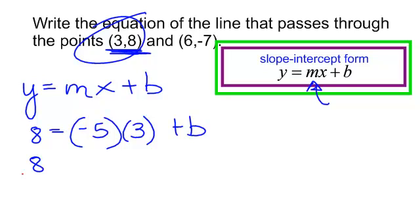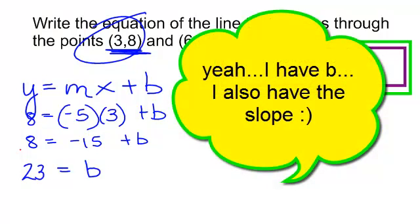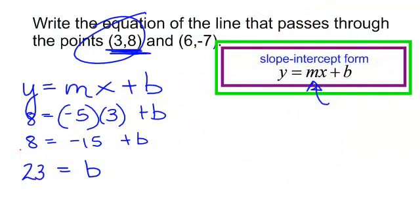The rest is just a little bit of algebra. Negative 5 times 3 is negative 15. Add 15 to both sides, so b is 23. Now you might say, "Yay, I have b, I'm done!" — but actually you're not done. You have to write the equation to get full credit. Remember, I was only borrowing the x and y, so I put my variables back in: y equals negative 5 times x plus 23. And that is slope-intercept form.